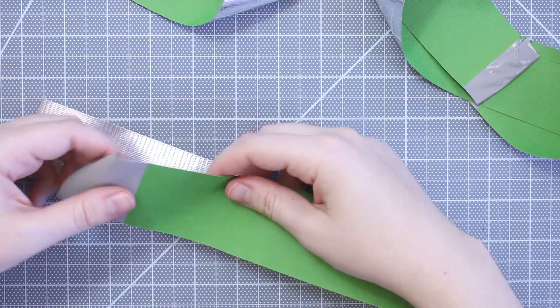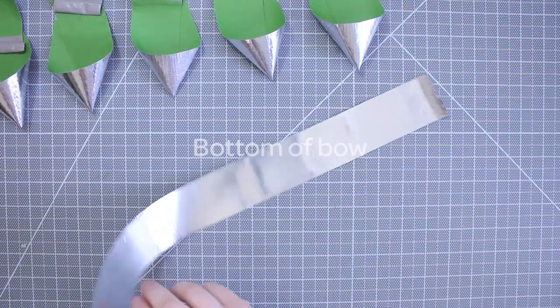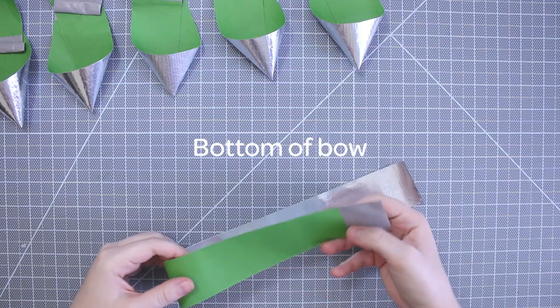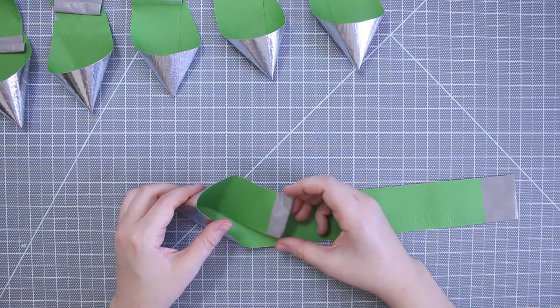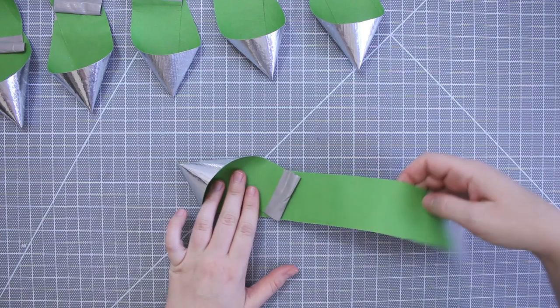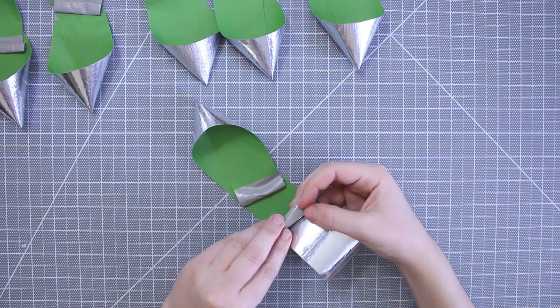When you reach the last two strips, one will be the bottom and one will be the top of the bow. For the bottom strip, do the same method, but roll the other end as well so there is a sticky side on the back. This will stick to your gift.